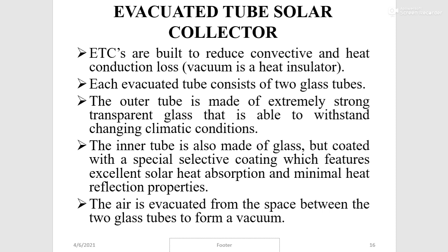Each evacuated tube solar collector consists of two glass tubes. The outer tube is made of extremely strong transparent glass able to withstand changing climatic conditions. The inner tube is also made of glass, but coated with a special selective coating that features excellent solar heat absorption and minimal heat reflection properties. The air is evacuated from the space between the two glass tubes to form a vacuum, so that heat collected at the inner glass cannot escape to the environment.